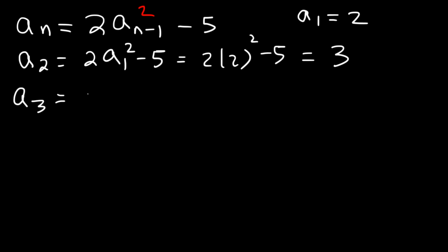a_3 is 2 times a_2 squared minus 5. So a_2 is 3. 3 squared is 9. 2 times 9 is 18. 18 minus 5 is 13.